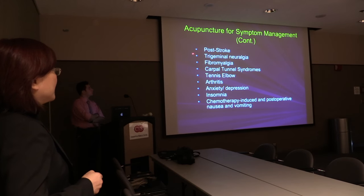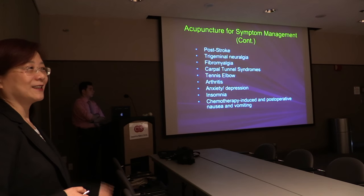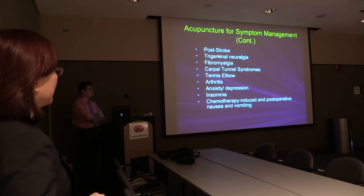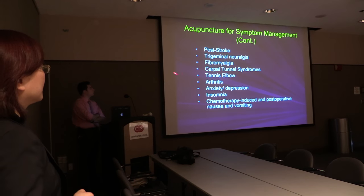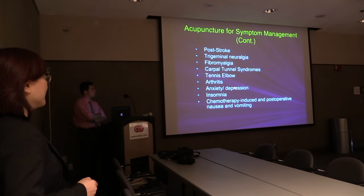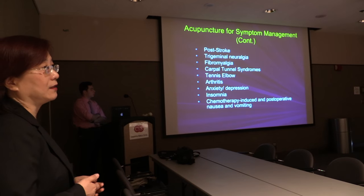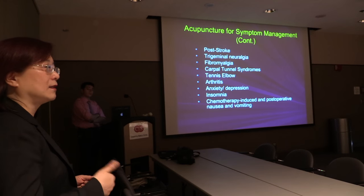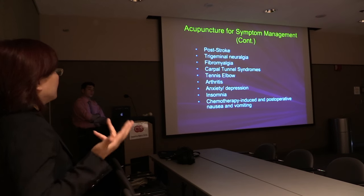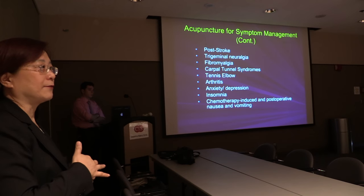We can also treat post-stroke patients — for example, a patient who has had a stroke and the whole body cannot move. Acupuncture is very effective for this. We also treat trigeminal nerve disorder, fibromyalgia, carpal tunnel syndrome, Bell's palsy, arthritis, anxiety, depression, insomnia, and chemotherapy side effects, especially for cancer patients after surgery who have nausea, vomiting, fatigue, back pain, neck pain, and shoulder pain. Sometimes they also have hiccups.